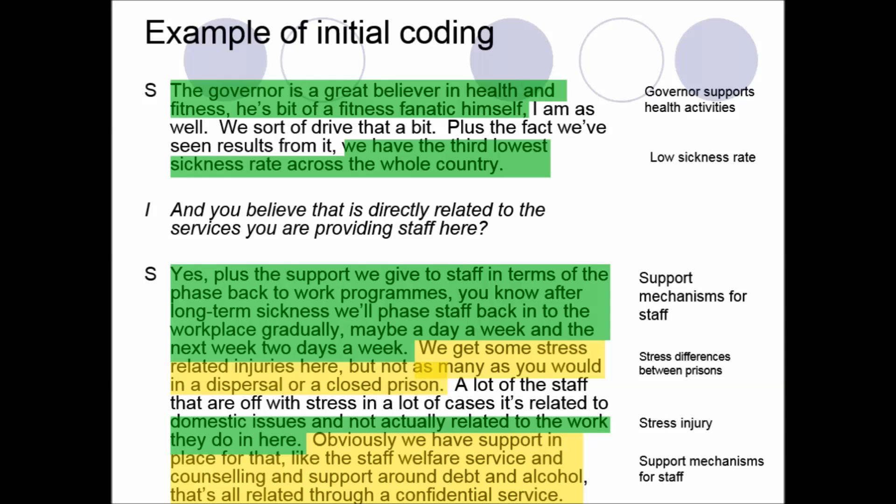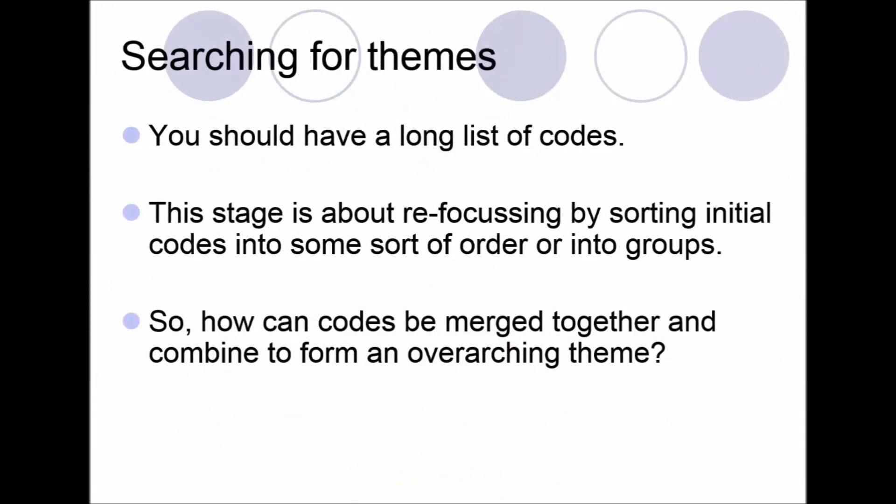The actual codes that you use, I'd suggest keep them brief and succinct. So for example I have here a code that's called low sickness rate and you can see how that relates to the passage of text that's been highlighted. So try and keep your codes relatively short and succinct because that will help as you move through the qualitative data analysis process.